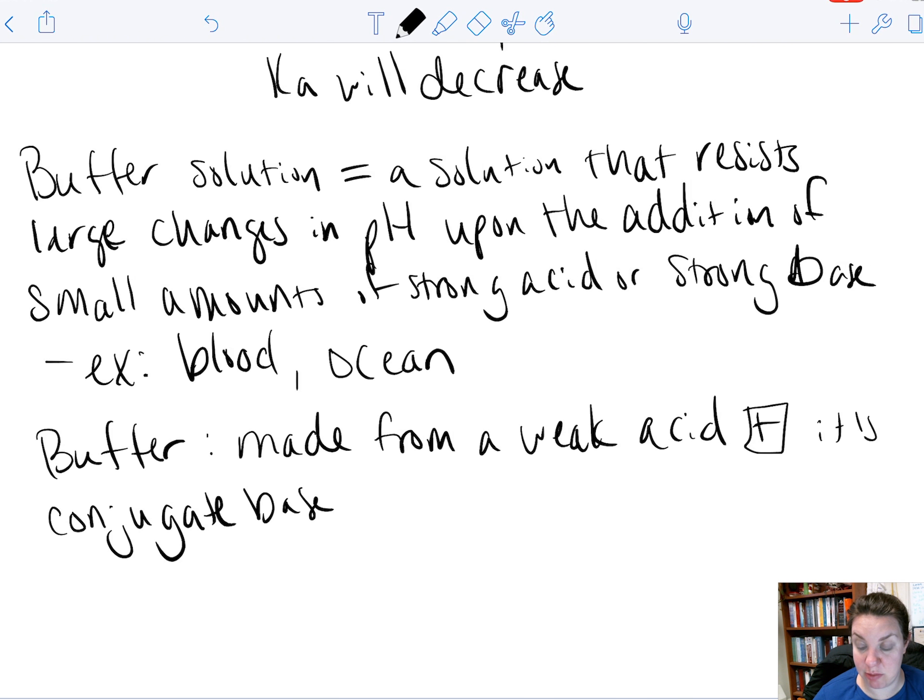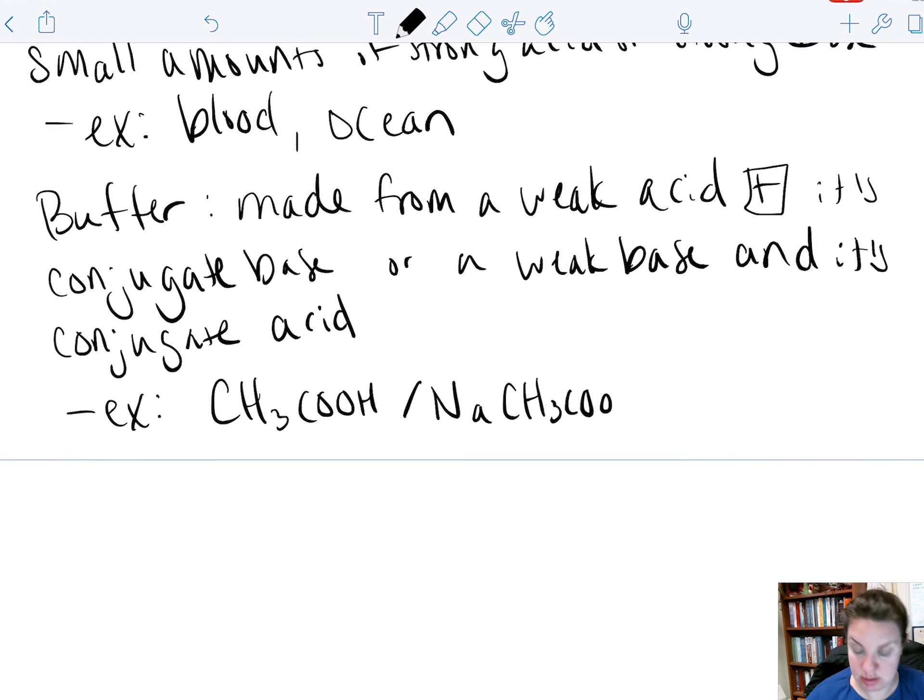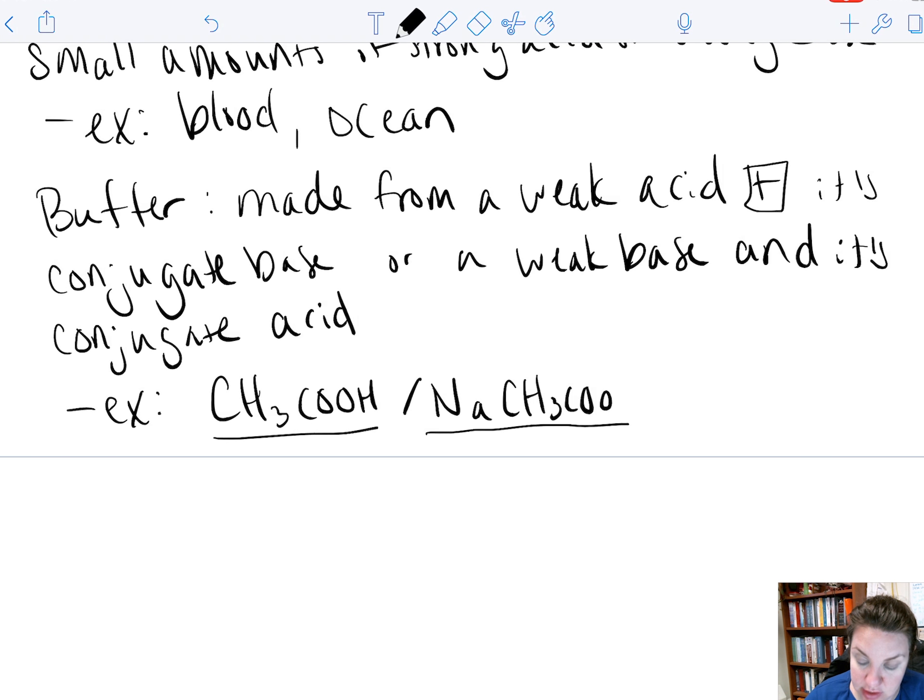And remember the conjugate base of a weak acid is a weak base. And the same thing for a weak base. Its conjugate acid will also be a weak acid. So an example of this would be acetic acid and sodium acetate. That would be an example of a weak acid and its conjugate base.